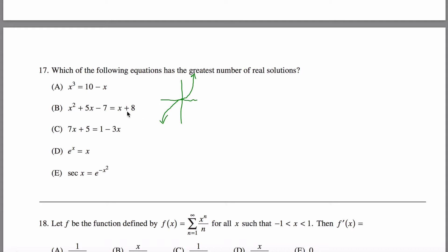And then graph 10 - x, well, that's a linear equation with y-intercept of 10 and slope negative one. So it looks like this. And so it's pretty clear that there's only going to be one solution to this first guy here, not three solutions.